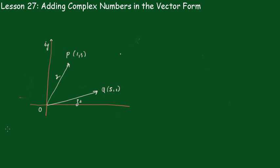Okay. Now, we're in the position to add complex numbers in the vector form. Now, we take these two complex numbers, P(1,3) and Q(5,1). Notice we've got i,y here, so don't have to keep writing 3i and i here. Now, adding these two, let's form the parallelogram.